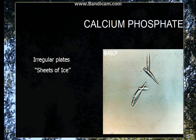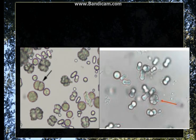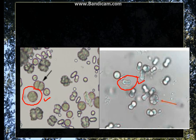Calcium phosphate crystals are also present in the urine and they resemble sheets of ice. Now going to calcium carbonate crystals — they are yellowish, dumbbell-shaped or spherical, and can have radial striations. They are present in alkaline urine. In the picture we can see them as dumbbell-shaped or spherical with striations inside.